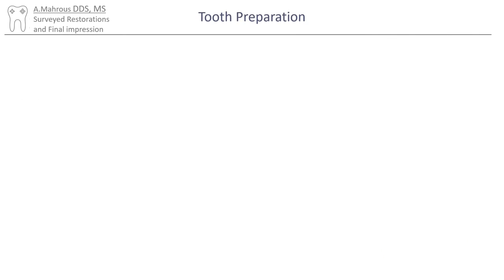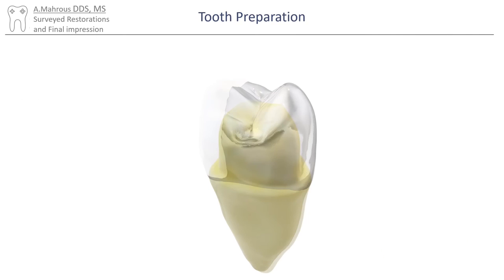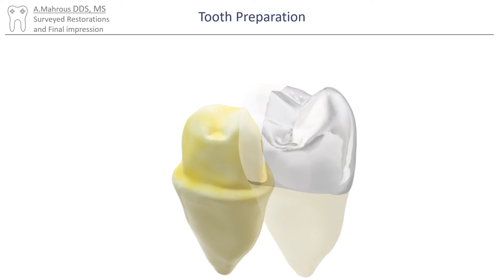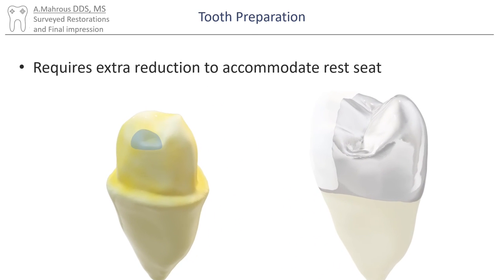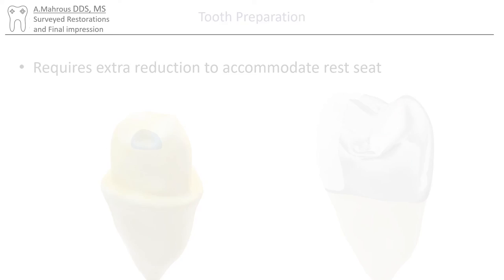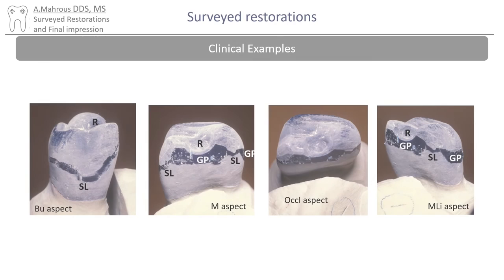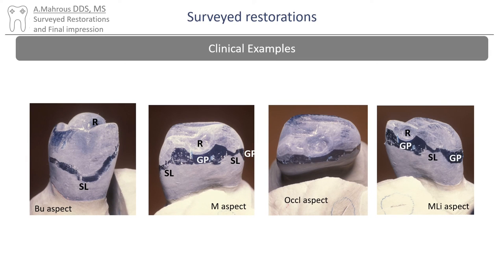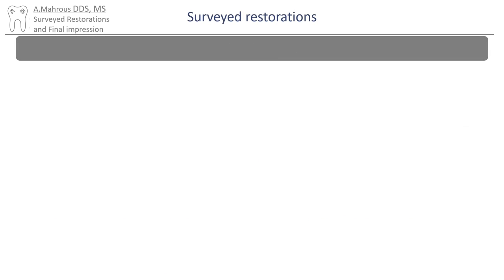It's important to ensure that there's an extra 0.5mm of reduction over the area where the rest seat is going to be made, to ensure enough metal thickness. During the fabrication of surveyed crowns, the ideal contours are waxed up and surveyed before casting.